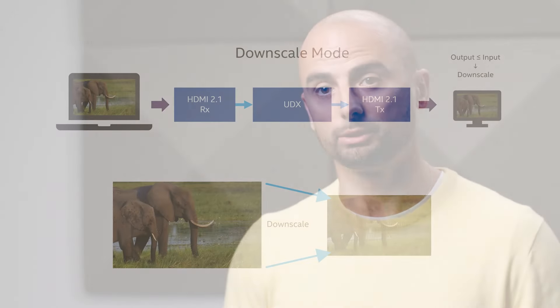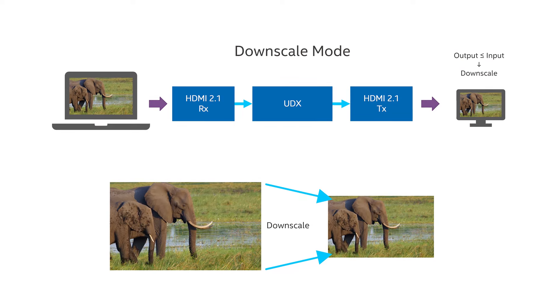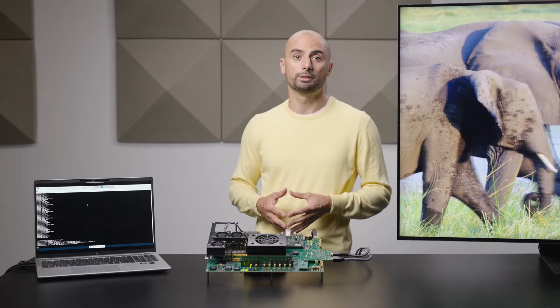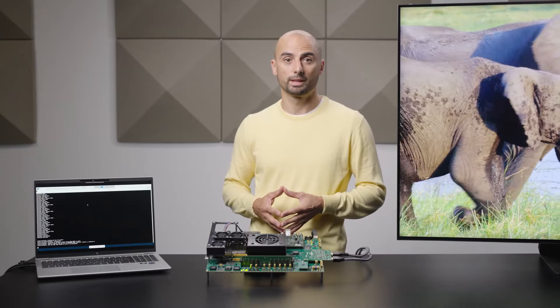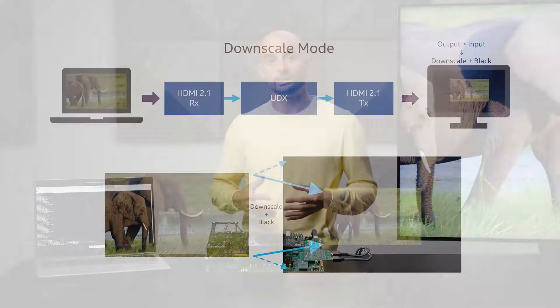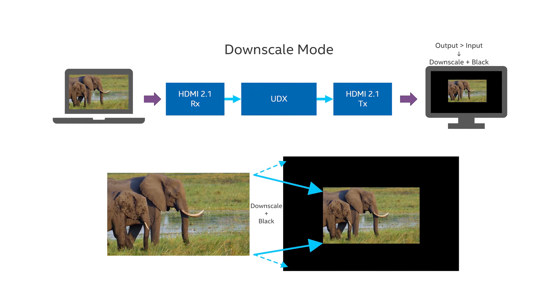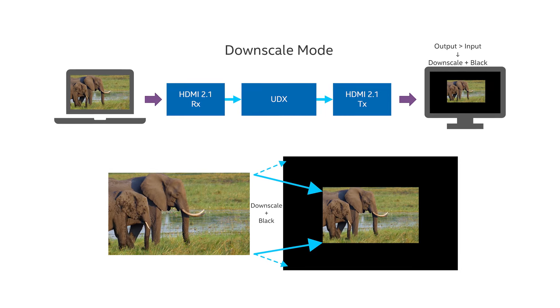In downscale mode, the input video is always downscaled to create the output. If the input is larger than the output, the appropriate scaling is applied to fill the display. If the input resolution is smaller than the output, a downscale ratio of 1.5 is applied and a black border is added by the mixer IP core.